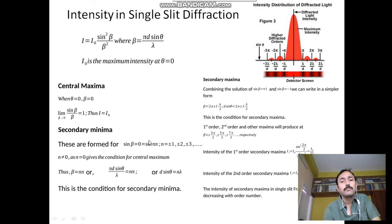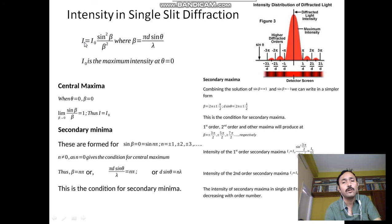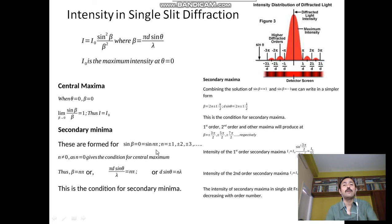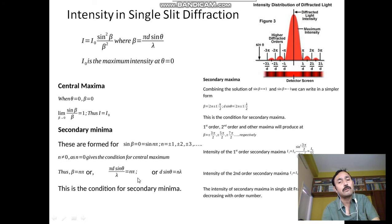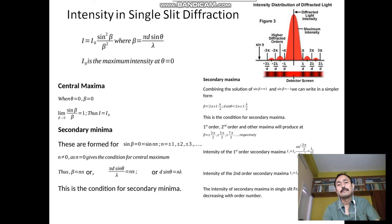For minima: when sinβ = 0, then I = 0. This gives β = nπ, but n = 0 is already used for the central maximum, so n = ±1, ±2, ±3, and so on. Since β = πd sinθ/λ = nπ, we get d sinθ = nλ — this is the condition for secondary minima. This is how the diffraction pattern is produced: central maximum with maximum intensity, first order secondary maximum with intensity I₀/22, second order with I₀/62, and so on.